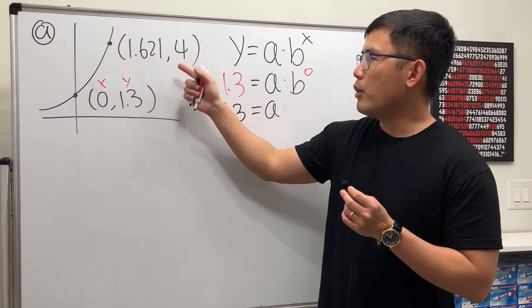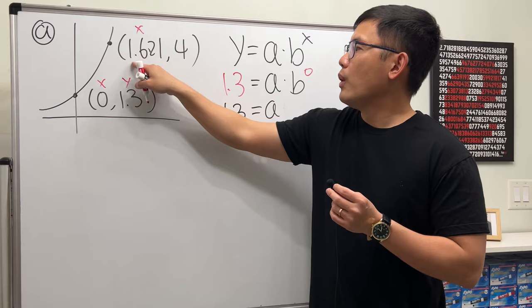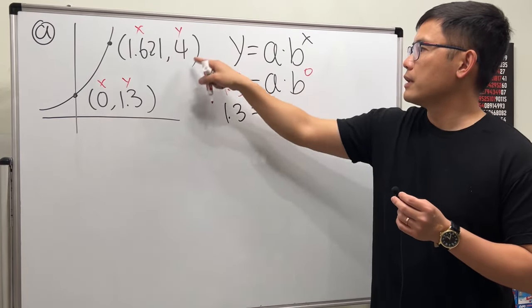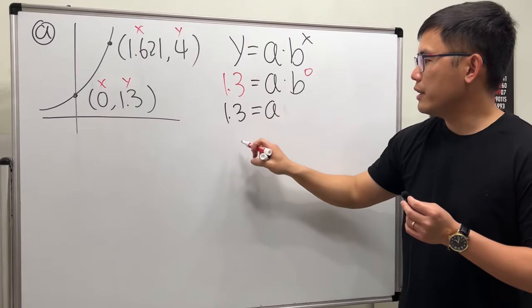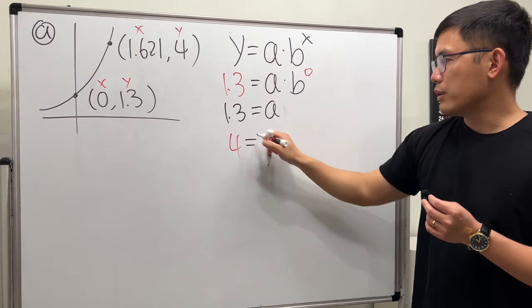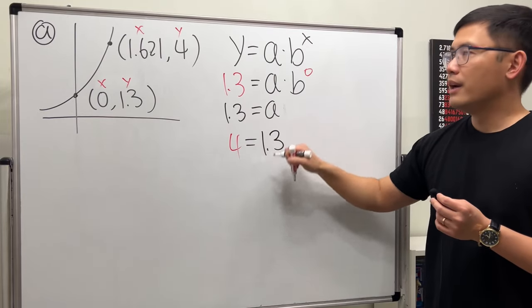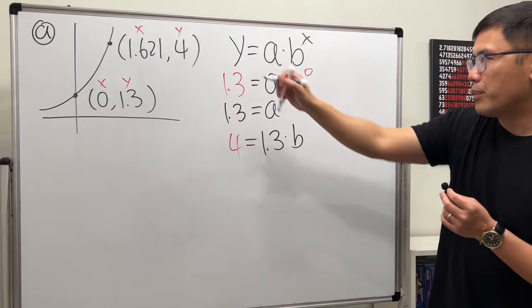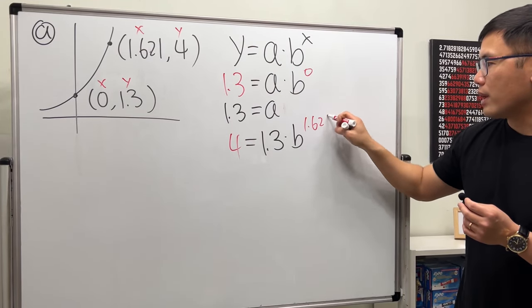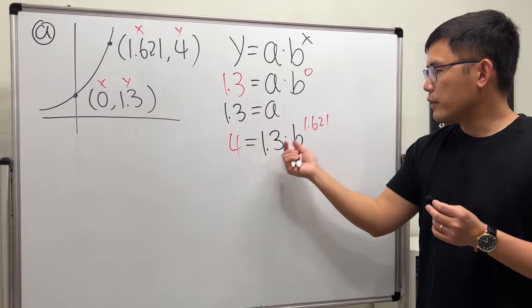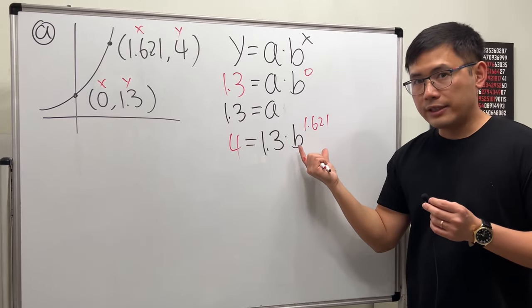Then, we are going to use this point, x is 1.61, and y is 4. Let's just plug in. So 4 equals a, which now we know is 1.3. b, we don't know, x is 1.61. Now, to solve this, because we have 1.3 times that, we have to isolate this part first.